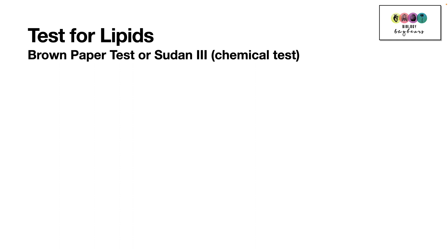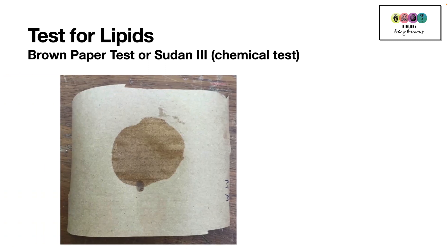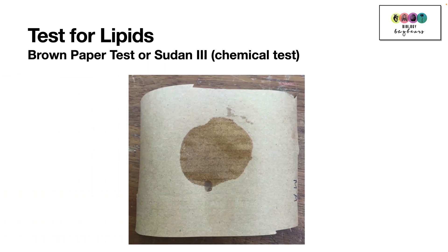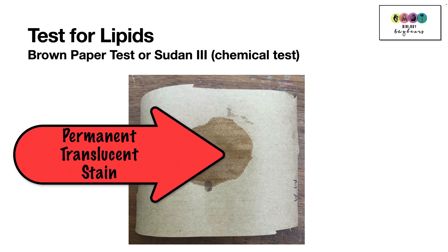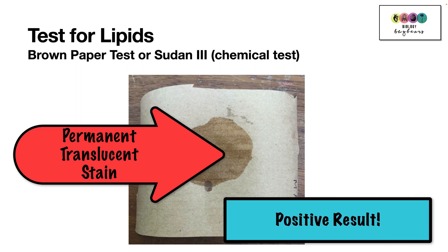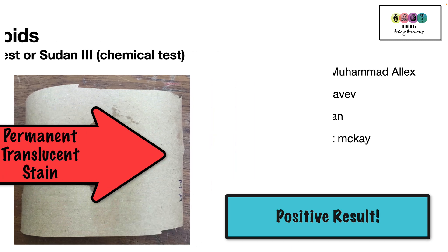What is the test for lipids? There are two tests: the brown paper test or the Sudan 3 chemical test. For the brown paper test, rub your sample on brown paper and leave it for a while. If there is a permanent translucent stain, that is a positive test for lipid. Both terms — permanent and translucent — must be written in your answer.